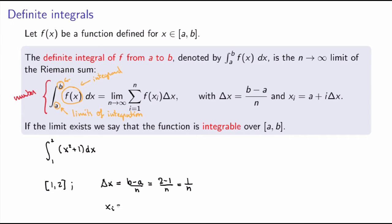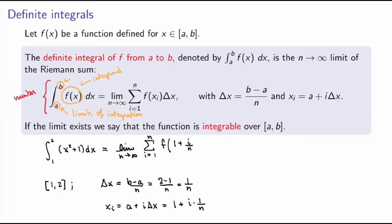The right endpoints xi equal a plus i times delta x. With a equal to 1 and delta x equal to 1 over n, I get xi equals 1 plus i over n. Substituting back, this symbol stands for the limit as n goes to infinity of the summation from i equals 1 to n of f of xi times delta x, where xi is 1 plus i over n. Since f of x equals x squared plus 1, I replace x by 1 plus i over n.